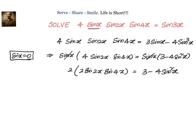Now, how we can write down 2 sin 2x sin 4x? We can apply the transformation formula from product to sum or difference. We can write it as 2 times cos 2x minus cos 6x equals 3 minus 4 sin squared x.